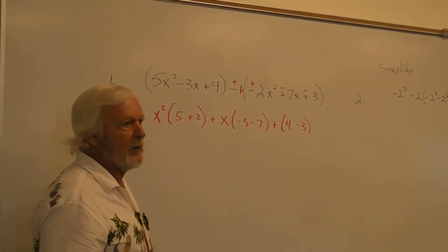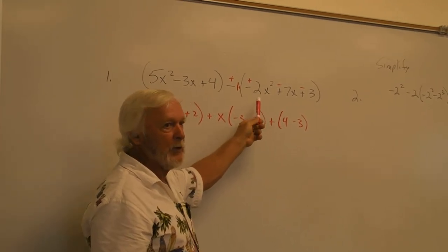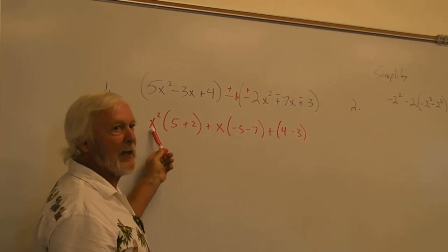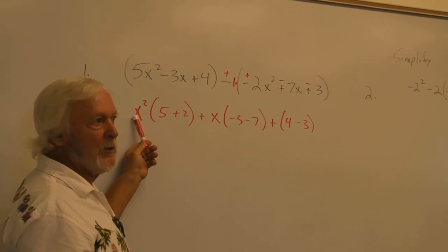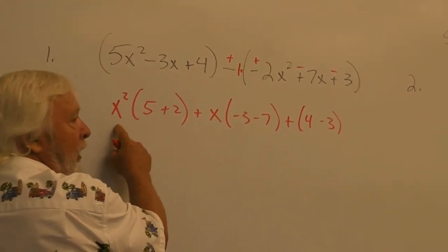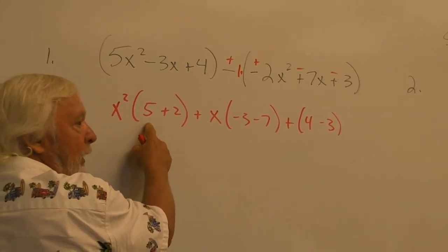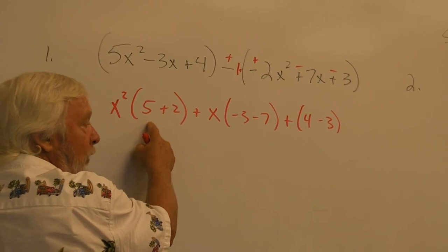But notice that the reason you put the x squareds next to each other is because they had x squareds. So if instead you can take the common factor and put their numeric coefficients, that's what these are.